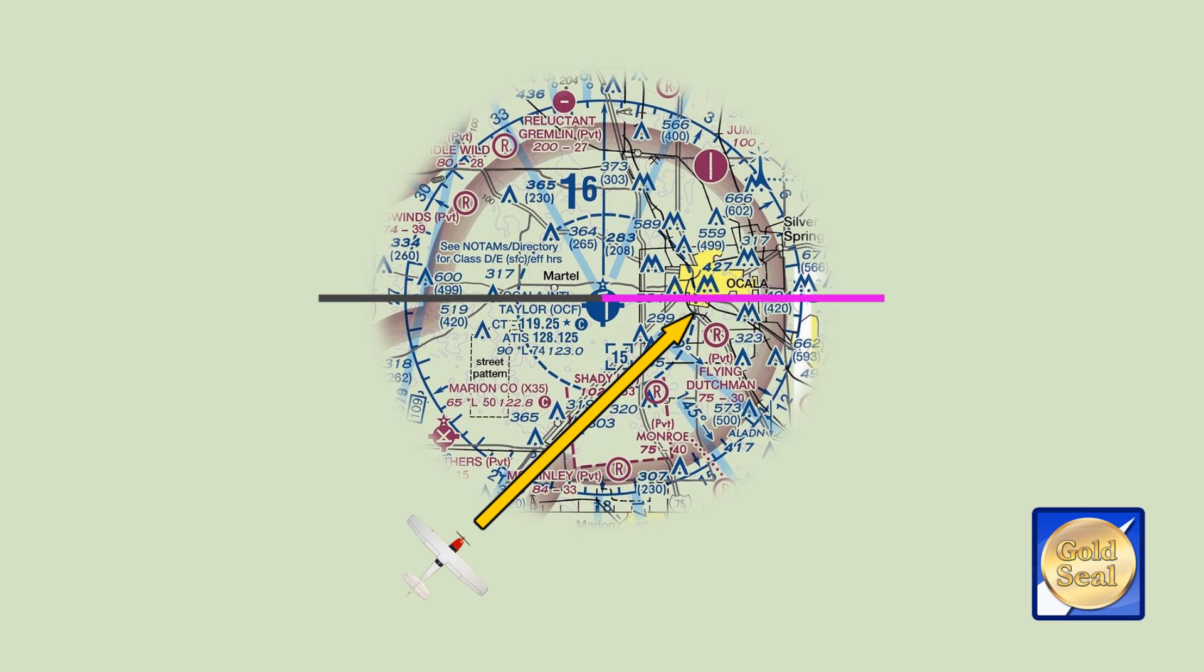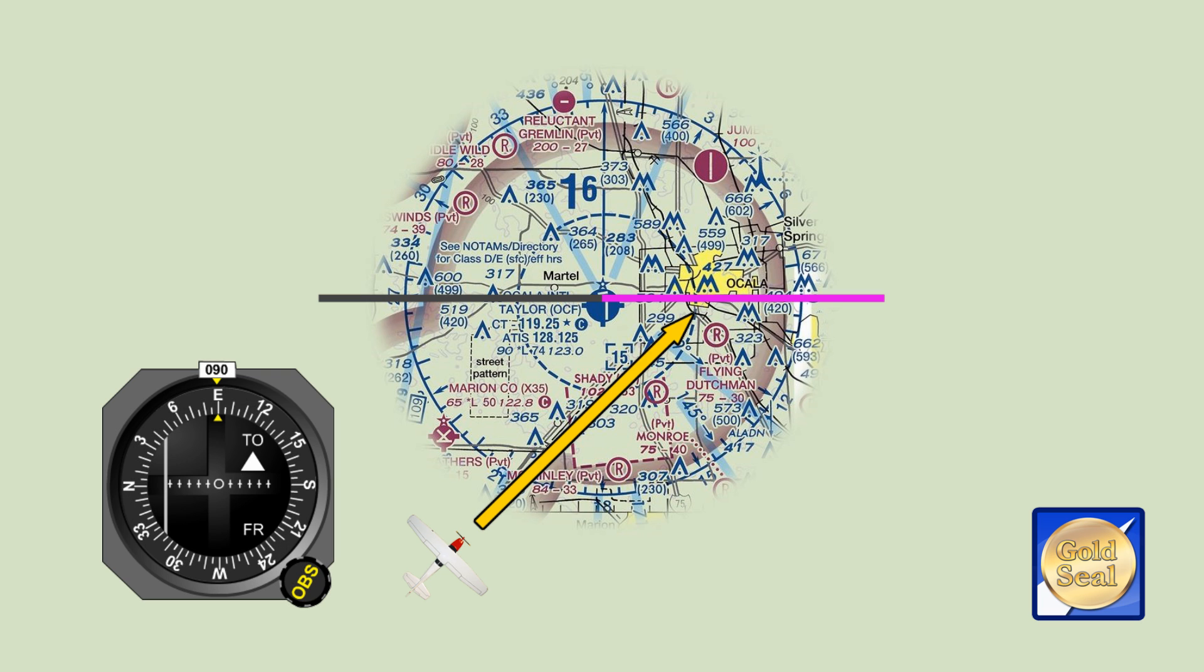First, dial in 090 on the Omnibearing indicator. That's so you can identify the radial when you get there. Second, calculate a heading to fly for your intercept. You know the outbound bearing you'll need to track the 090 radial. It's 90 degrees.